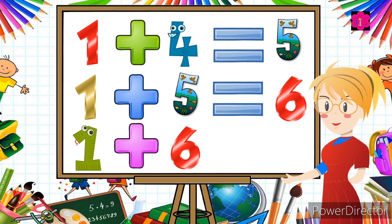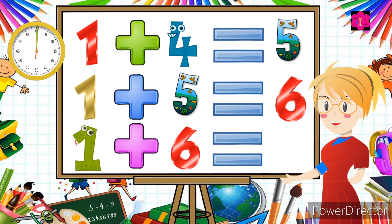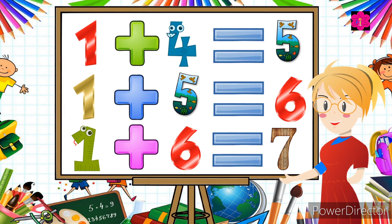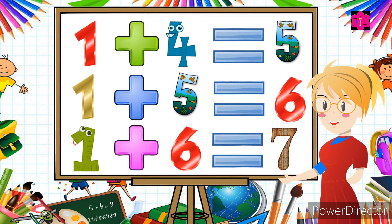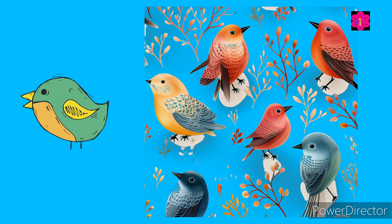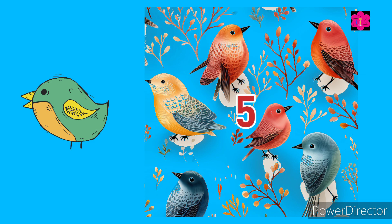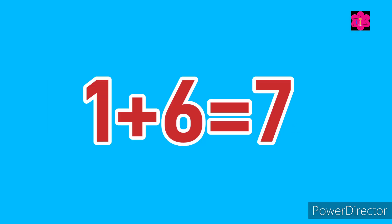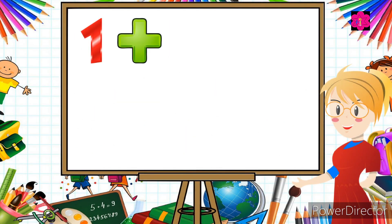Seven is the correct answer! Let's solve together. Here is one bird, let's add six more birds. Now count together: one, two, three, four, five, six, seven. One plus six is equal to seven.